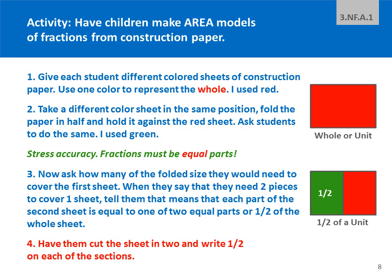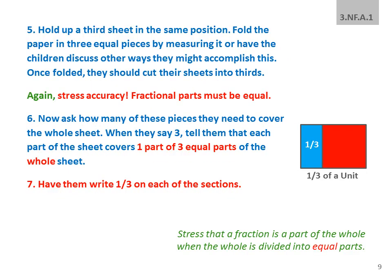I like to see children make their own area models using construction paper. They can use one color to represent the whole and then fold a second different-colored sheet into two equal parts to represent halves. As they do this, stress accuracy — fractions must be equal parts. Ask them how many of the folded sheet size would they need to cover the first sheet. When they understand that they need two pieces to cover one sheet, tell them that each part of the second sheet is equal to one of two equal parts, or one half of the whole sheet. They should cut the second sheet into halves and write the fraction one half on each part.